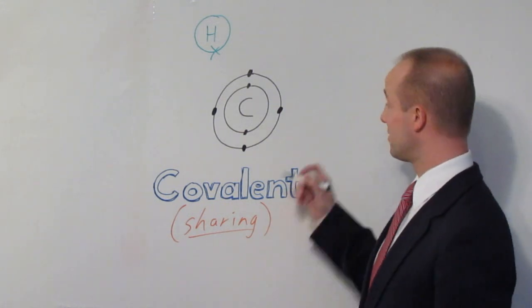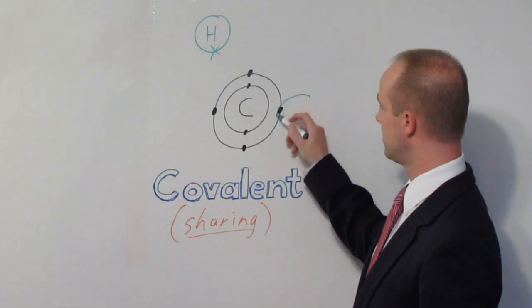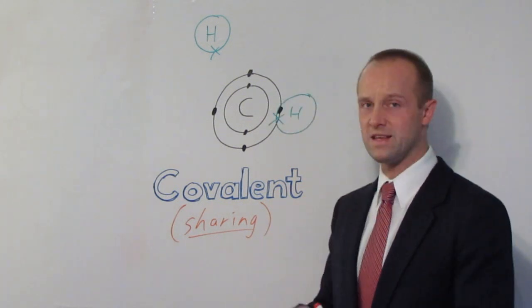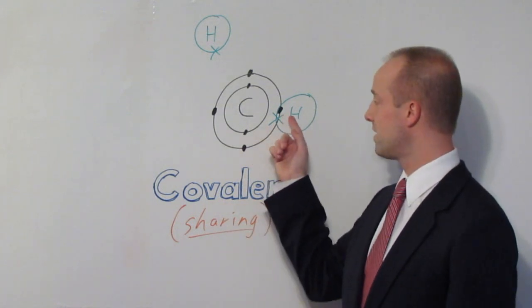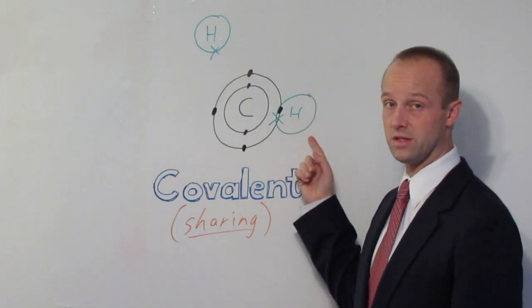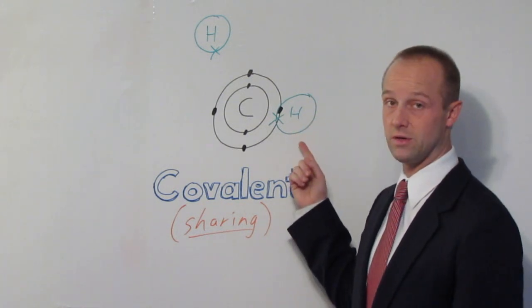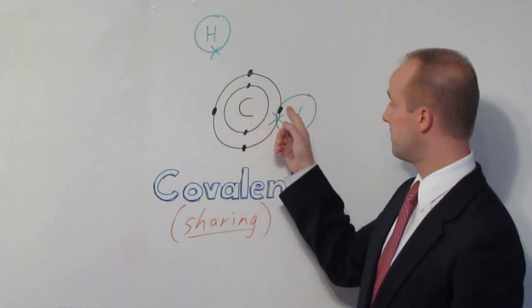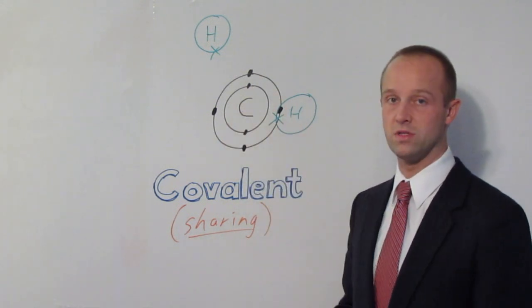So if a hydrogen comes along and meets our carbon, that hydrogen can do this. There's now a pair of shared electrons in that covalent bond. The hydrogen now has two electrons in its outer shell, so its outer shell is complete because you can only fit two electrons in that first shell. The carbon now has one, two, three, four, five electrons in its outer shell.